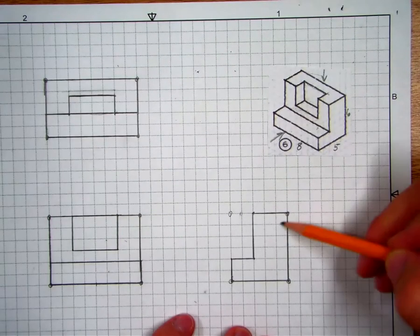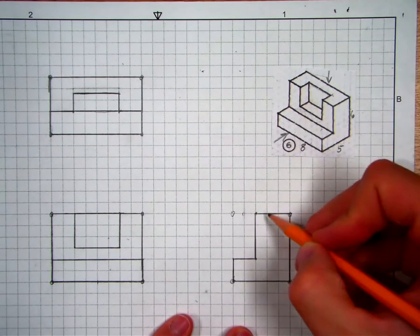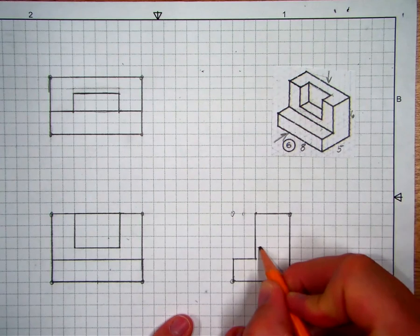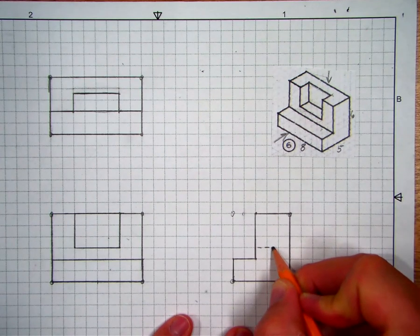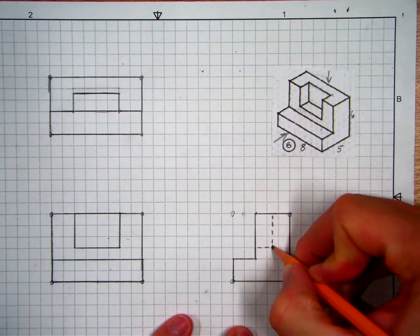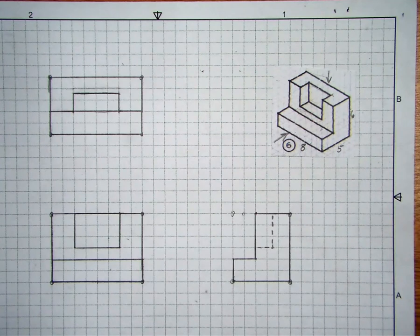Okay. So the same thing here then. I should go one and a half blocks inward. And then go down three blocks. And I have some hidden lines to throw in there. Alright. And that's that one. Alright.